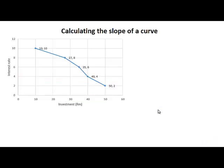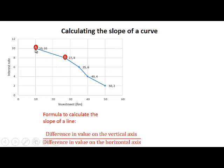Here we have a diagram that shows the relationship between the interest rate and investment. If we compare point A and point B, we can see that when the interest rate decreases from 10 on the vertical axis to 8 on the vertical axis, investment increases from 10 to 27.